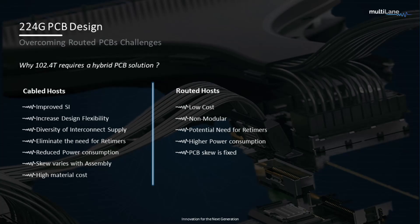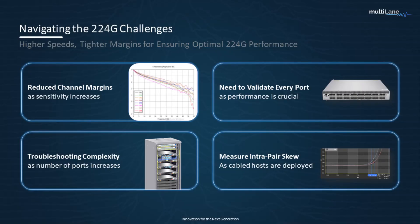Moving to cabled hosts enables a diversity of CDR suppliers, making them overall more competitive. Moving to 224 gig systems poses different challenges, like tight channel margins — hence the need for optimal signal integrity performance at every part of the system. We need to validate every part of the system. Validating each part will require simple and efficient tools to troubleshoot. And since cable hosts are being deployed, it is also essential to have a close look at intrapair skew so that we can optimize insertion loss and overall signal integrity.